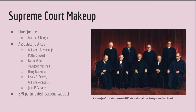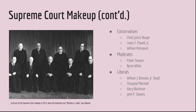Out of these justices, only eight participated in the discussion and decision-making of this case. John P. Stevens opted to sit this case out. The Supreme Court in 1975 was pretty balanced. On the conservative side was Chief Justice Burger, Lewis F. Powell Jr., and William Rehnquist. For the moderates, there was Potter Stewart and Byron White. The liberals were represented by William J. Brennan Jr., who was said to be the lead liberal, in addition to Thurgood Marshall, Harry Blackmun, and John P. Stevens.